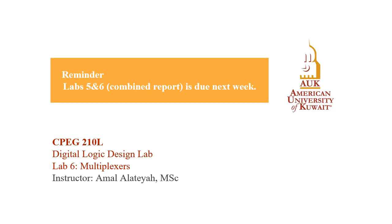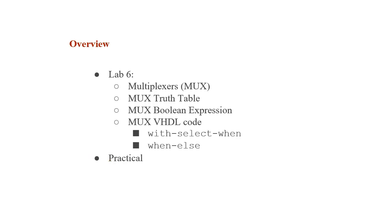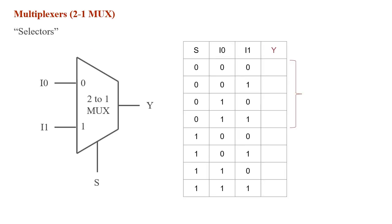This video covers the lecture part of lab 6, which is about multiplexers. In lab 6 we're introducing multiplexers, also known as muxes. We're going to start with a multiplexer truth table and then the boolean expression to define the output of a 2-to-1 multiplexer. Finally, we'll move on to how to write code for multiplexers in the HDL.